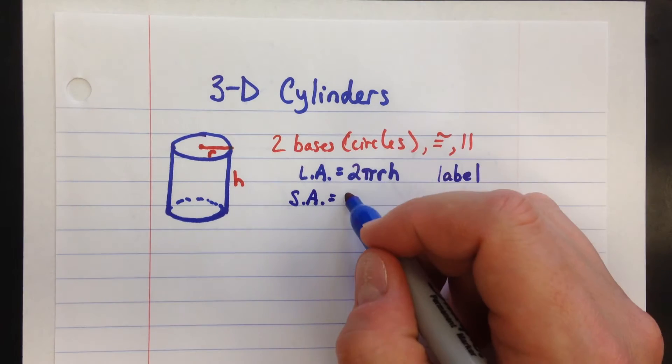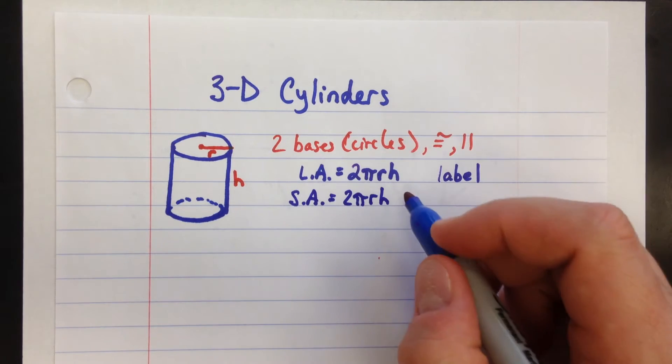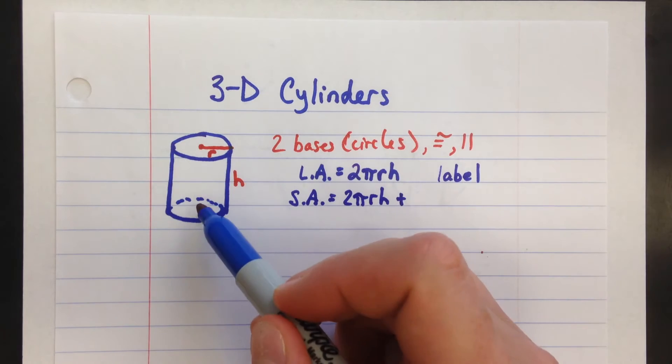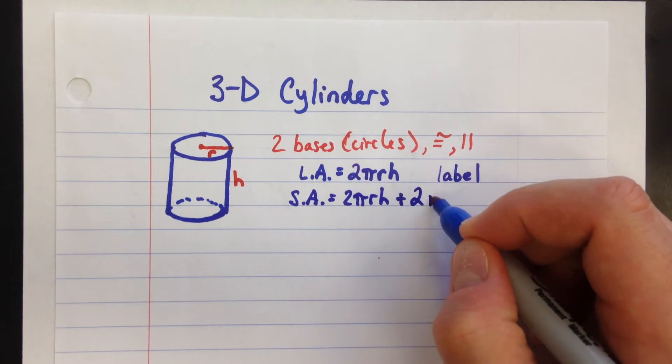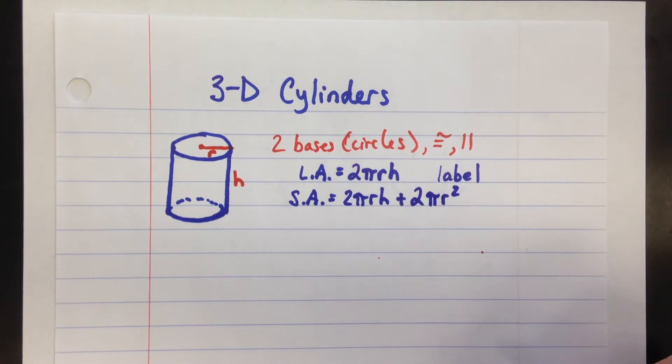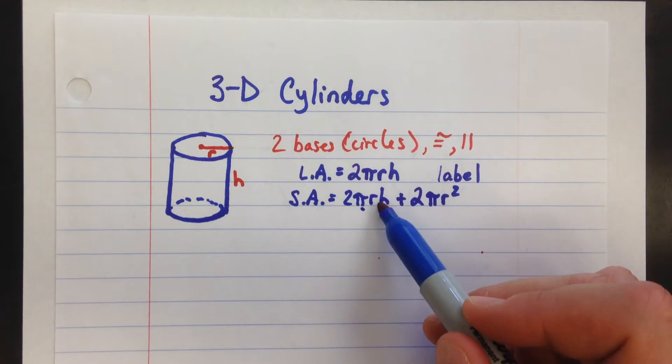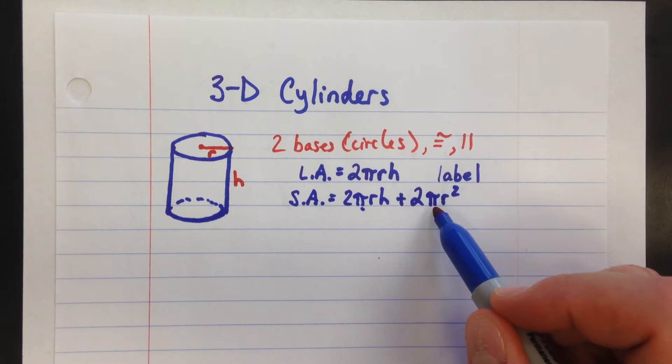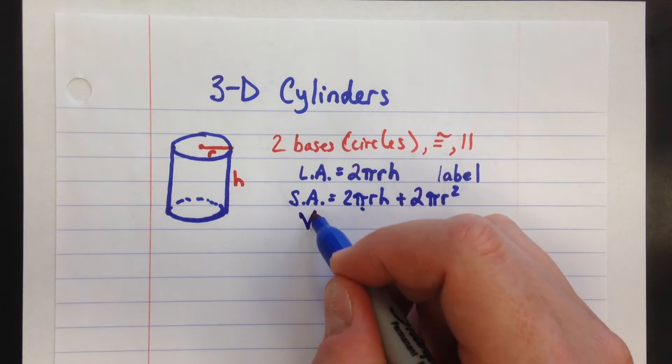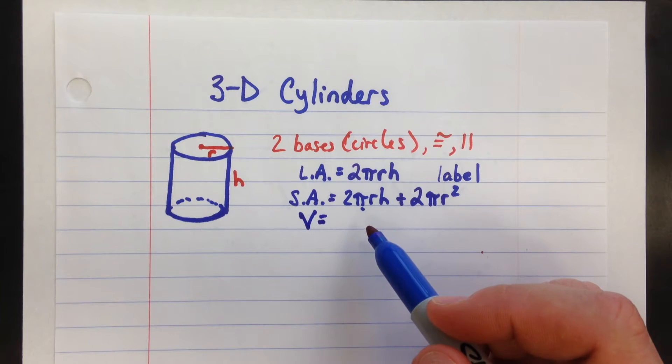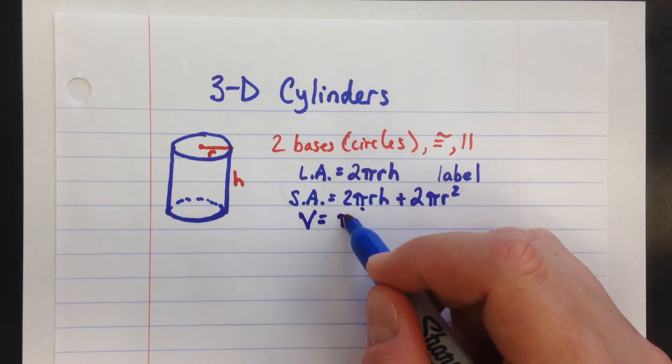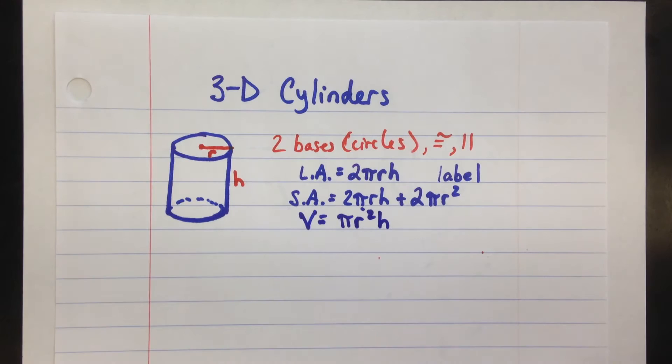Surface area: the formula is 2πrh—that's going to be your lateral area—plus the two bases, the top and the bottom. So there's two bases. What's the area of the base, which is a circle? It's πr². So lateral area plus you have two circles to add in, two areas of circles. Again, that's your lateral area plus 2πr² except because it's a circle, we know the formula for the area of a circle is πr². Volume: for a prism was area of base times height, capital B times h. Well, what's the area of a circle, the base? πr² times the height. Those are going to be your three formulas.